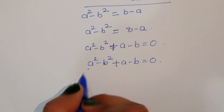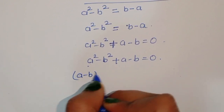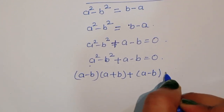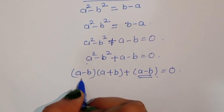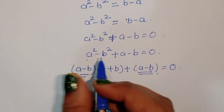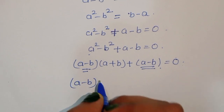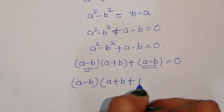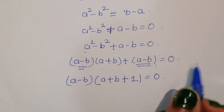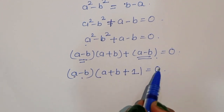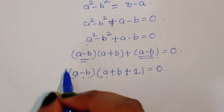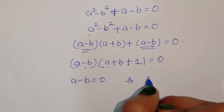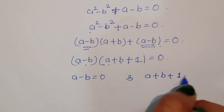Using the formula A squared minus B squared equals (A minus B)(A plus B), we get: (A minus B)(A plus B) plus (A minus B) equals 0. Taking (A minus B) as common, we get (A minus B)(A plus B plus 1) equals 0. So we have two solutions: A minus B equals 0, and A plus B plus 1 equals 0.